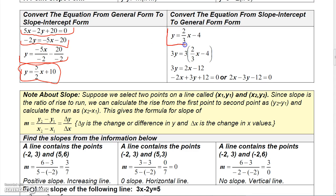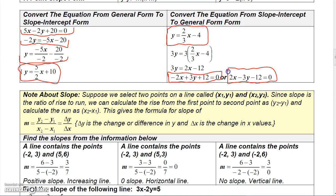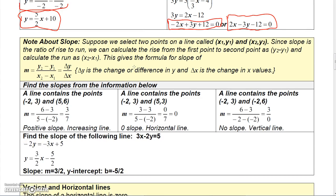To go the other way, if you have a fraction, first get rid of it by multiplying all three terms by 3: three times y is 3y, three times two-thirds x gives 2x, and three times negative 4 is negative 12. Then move 2x and negative 12 to the left side to get negative 2x plus 3y plus 12 equals 0. If you don't like the x coefficient being negative, just multiply every term by negative 1 — it doesn't change the equation.